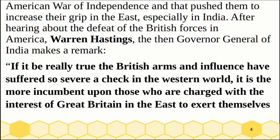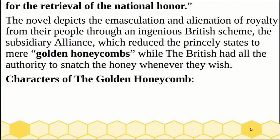After hearing about the defeat of the British forces in America, Warren Hastings, the then Governor-General of India, makes a remark: 'If it be really true, the British arms and influence have suffered so severe a check in the Western world, it is more incumbent upon those who are charged with the interest of Great Britain in the East to exert themselves for the retrieval of the national honour.' The novel depicts the emasculation and alienation of royalty from their people through an ingenious British scheme — the subsidiary alliance — which reduced the princely states to mere golden honeycombs, while the British had all the authority to snatch the honey whenever they wished.